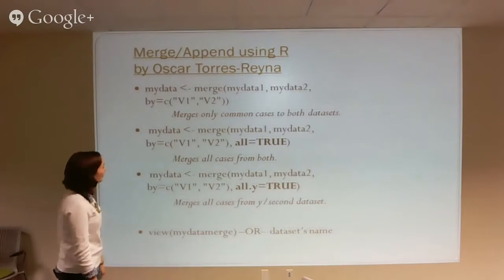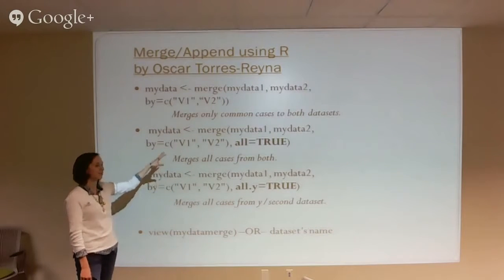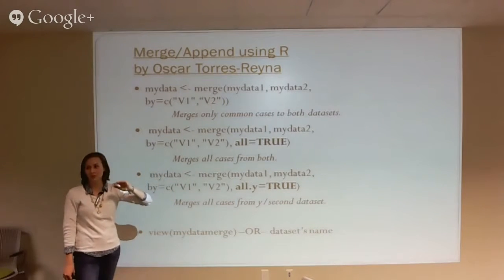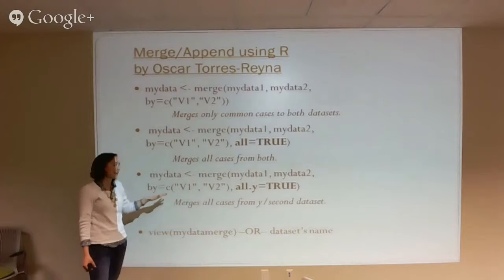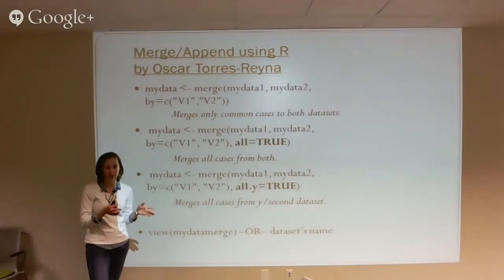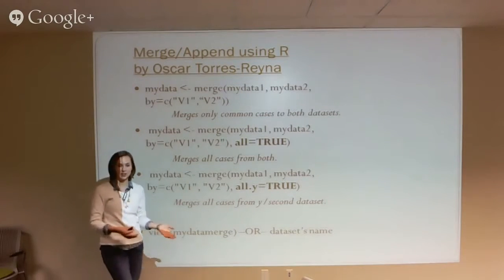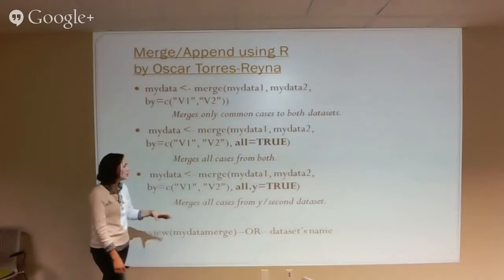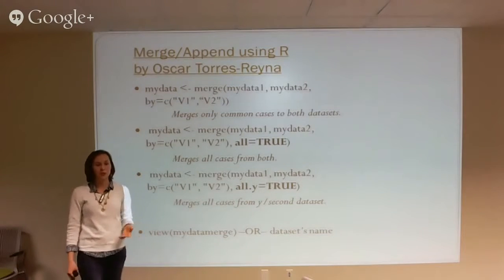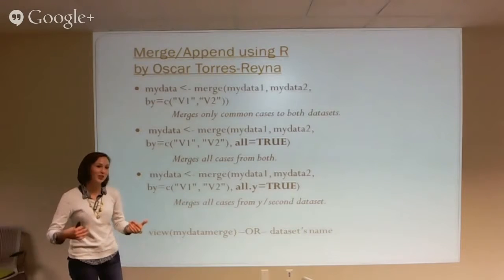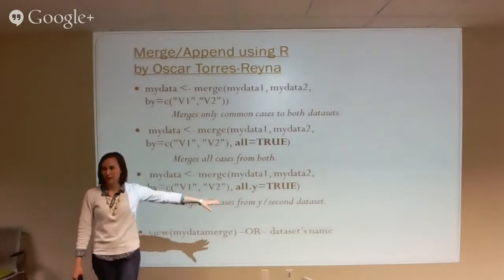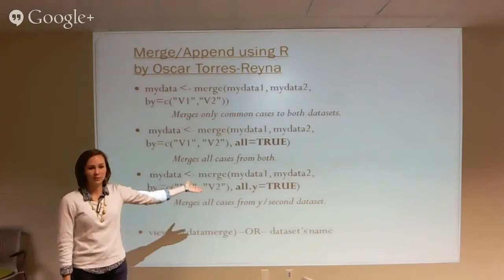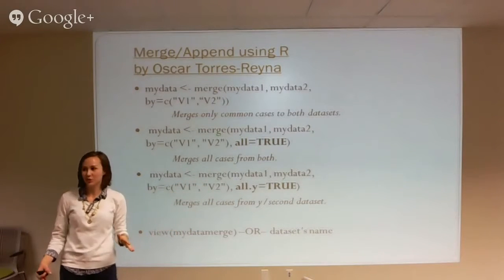We want 'all' to be TRUE. By doing this, it's going to merge all of the cases from both of those data sets, which is really what I wanted to do. Additionally, you can do things looking at just one particular data set — like your first data set versus your second. If that's what you're trying to do, you can include .y or .x in your arguments. So there are things you can do to make it your own.